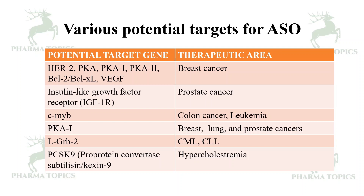PKA1 is expressed in breast, lung, and prostate cancers, and ASOs targeting it are useful in treating these cancers. LGRB2, expressed in chronic myeloid leukemia and chronic lymphoid leukemia, when targeted by ASOs, is useful in addressing CML and CLL. PCSK9 (proprotein convertase subtilisin/kexin 9) is related to hypercholesterolemia, and ASOs targeting it are useful in its treatment.